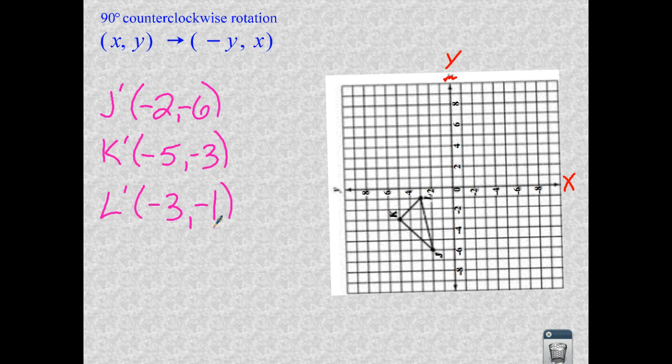And again, if you just went to use your counterclockwise notation rule right here, which happens to be negative y now, comma, positive x. Again, we reverse the variables, but this time we change the sign of our original y value. And that will get you the counterclockwise rotations.